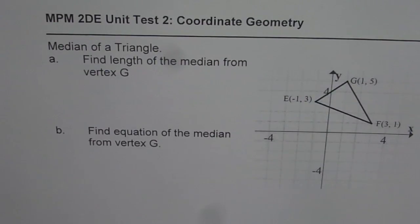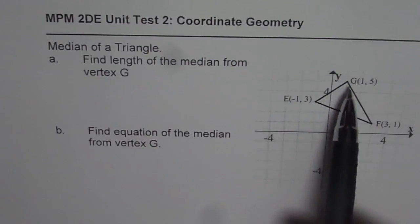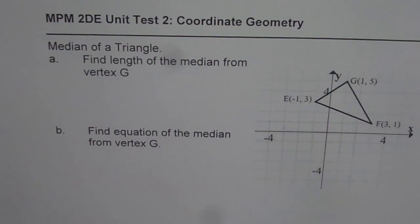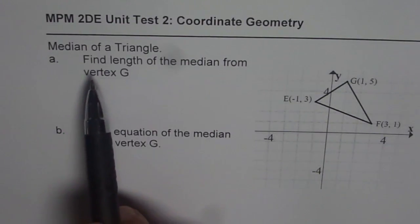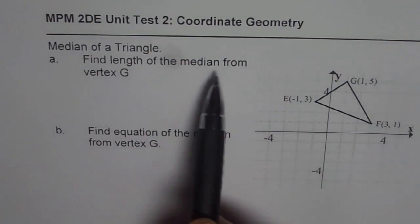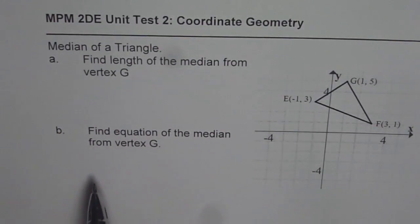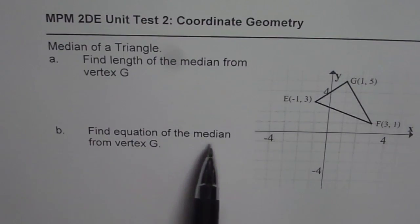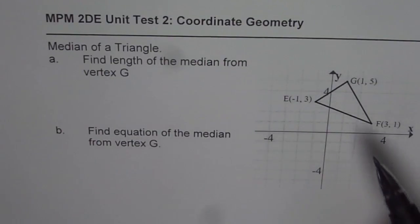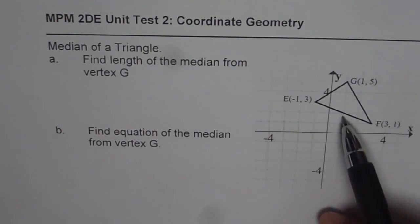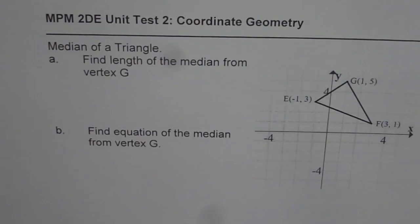The very first question on coordinate geometry is about median of a triangle. We are given a figure here, a triangle is there giving three vertices, E, F and G. The question is find length of the median from vertex G. Part B is, which I have just added, find equation of the median from the vertex G. Now as you know, median is a line from the vertex to midpoint of the opposite side.